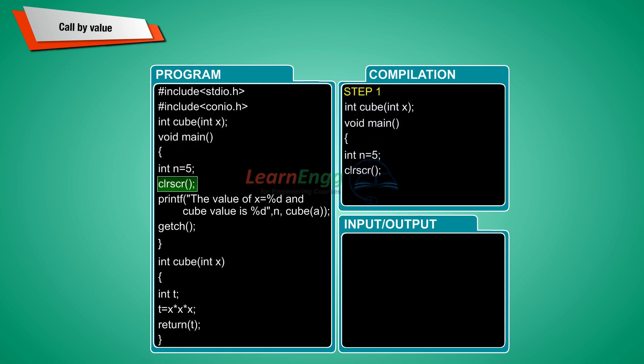Inside the main function, declare a required variable n equals 5. Cube function is used to call the subroutine of the program where cube function has the argument a. Cube function calculates the volume of the cube, that is t equals x into x into x. Output: The value of x is equal to 5 and cube value is 125.